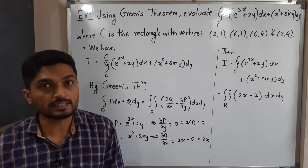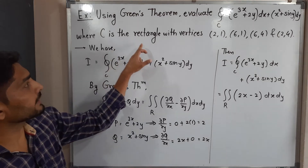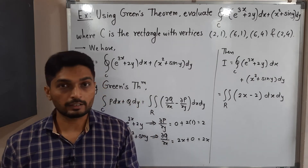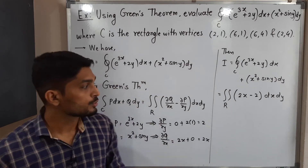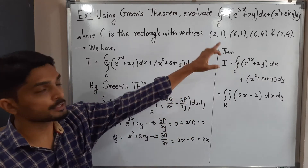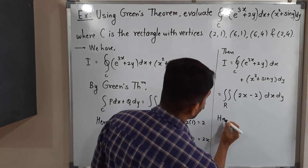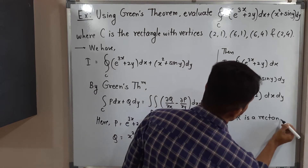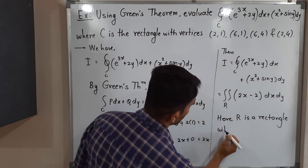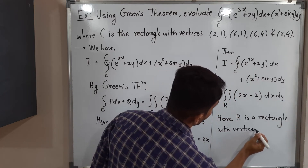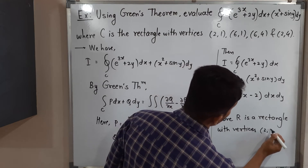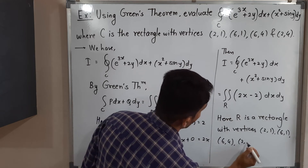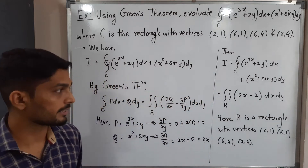Let us understand region R. C is a rectangle, so R is the interior part bounded by that closed curve C. R is a rectangle with vertices (2,1), (6,1), (6,4), and (2,4). Drawing the diagram: the four vertices form a rectangle bounded by the lines y=1, y=4, x=2, and x=6.